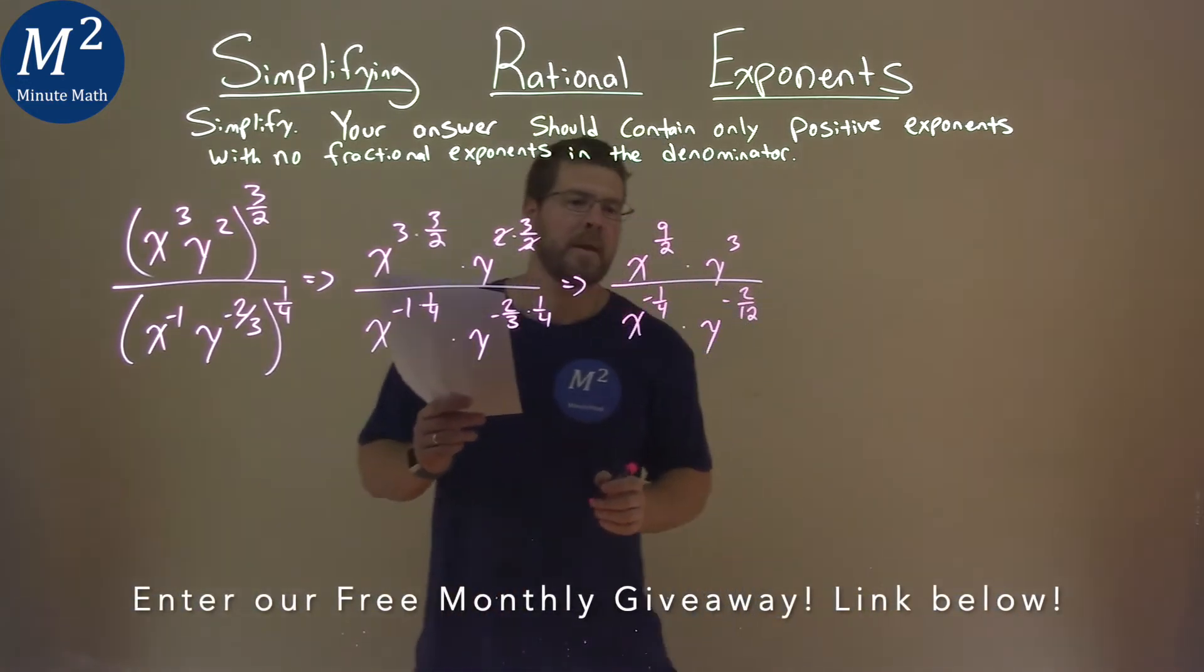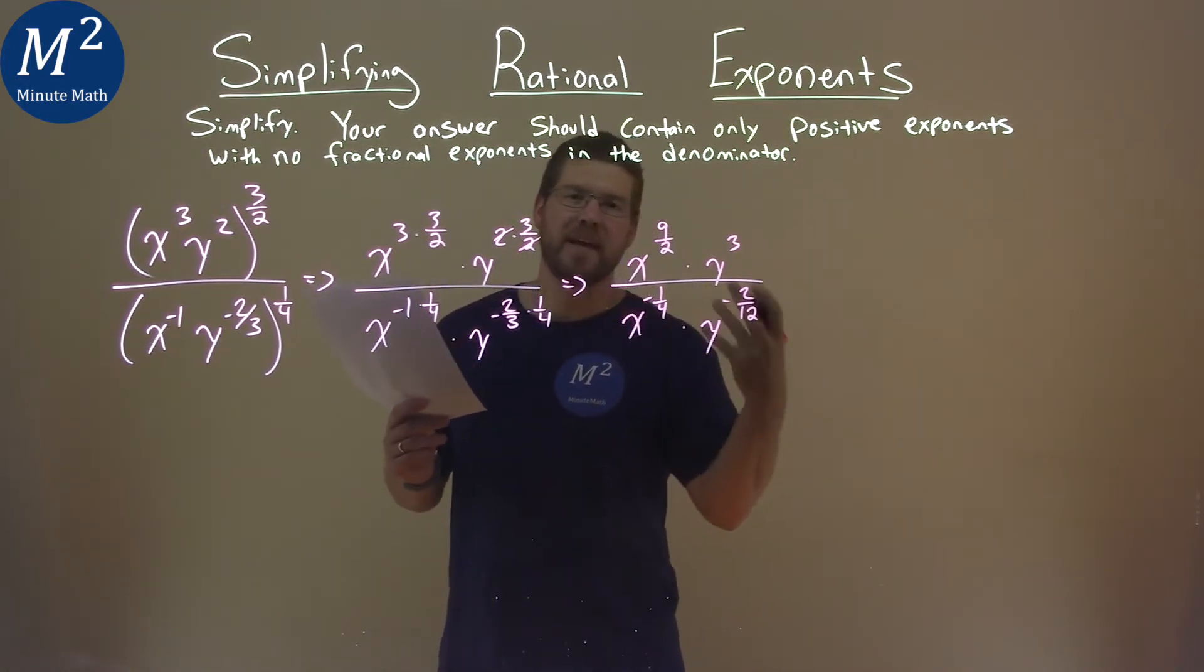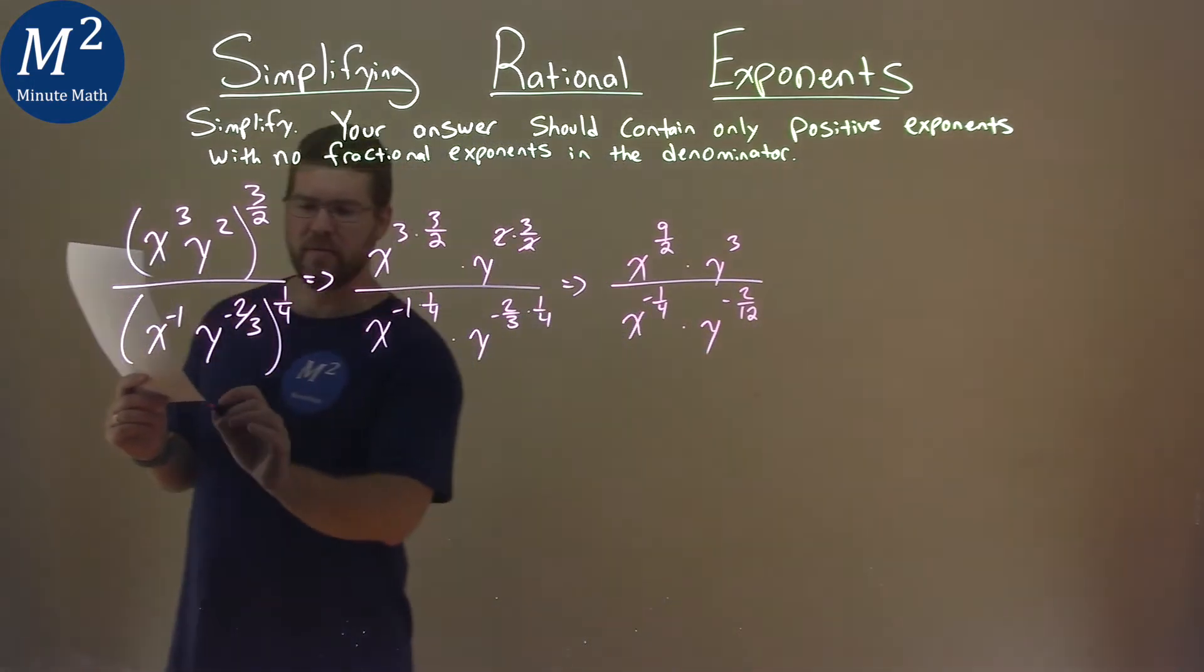Luckily for us, both parts in the denominator have a negative exponent, which means we can raise them to the numerator and make them a positive exponent. So let's do that right here.